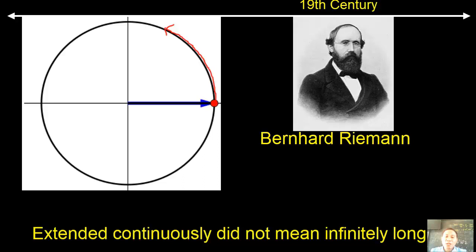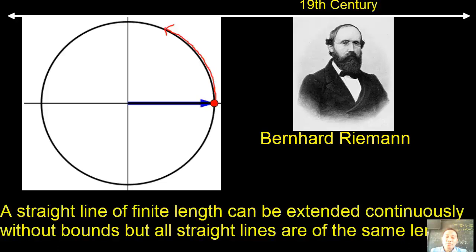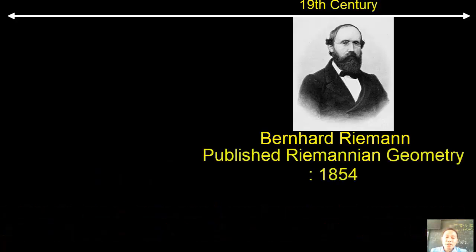He said a straight line of finite length can be extended continuously without bounds, but all straight lines are of the same length. He published his new system of geometry in 1854, and he succeeded in constructing a mathematical model satisfying the first four postulates and the negation of the parallel postulate.